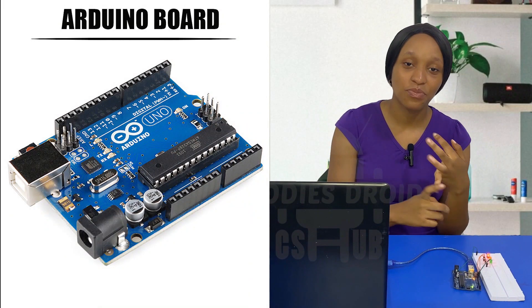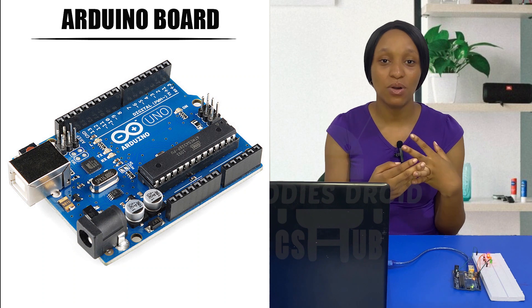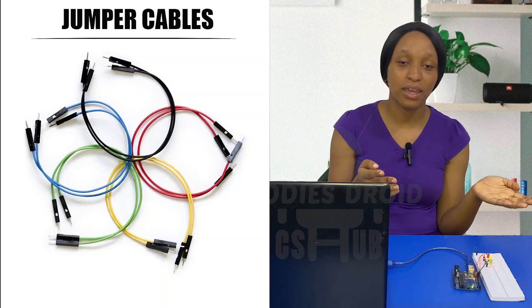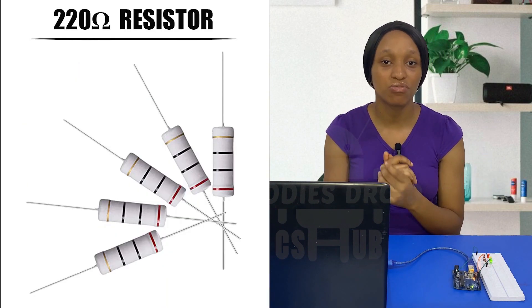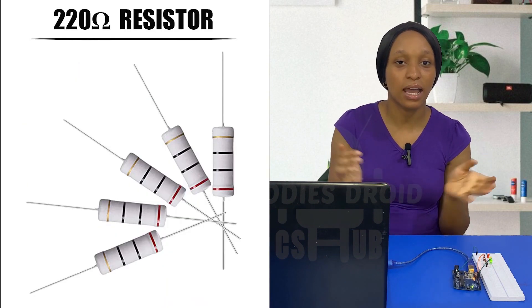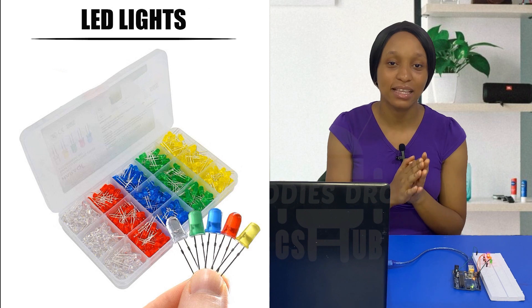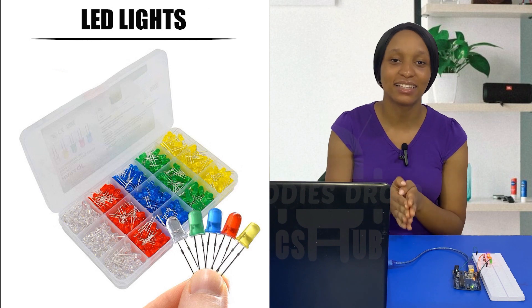The materials we'll be needing are our Arduino board, our breadboard, jumper cables, 220 ohm resistors, and our LED lights.